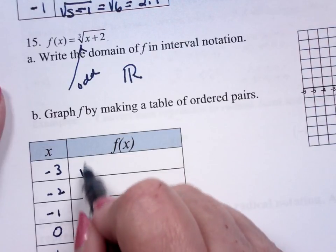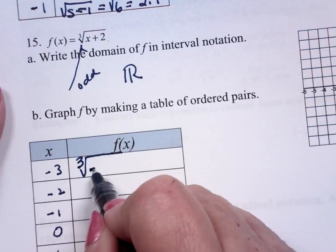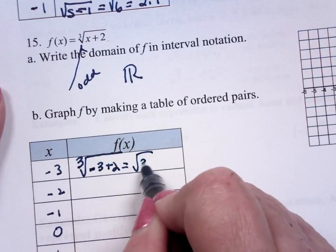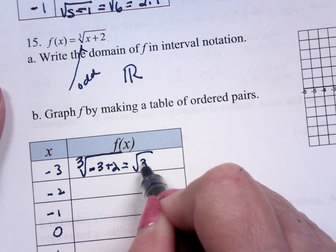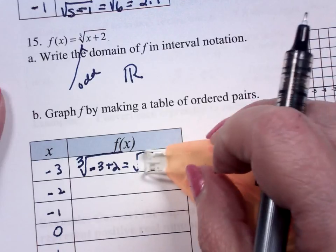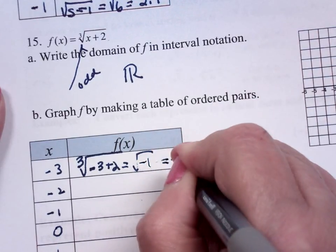This is going to be the cube root of negative 3 plus 2, which is the cube root of negative 1, which is negative 1.